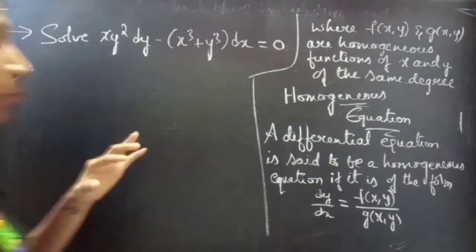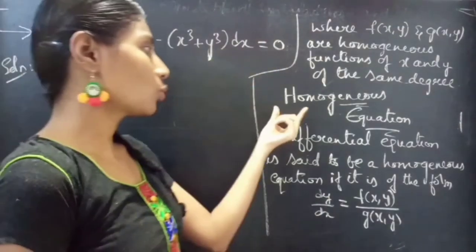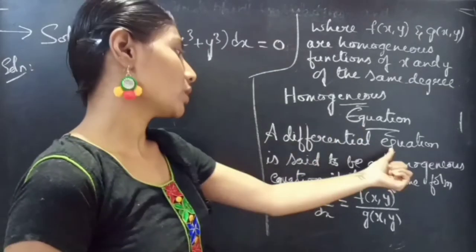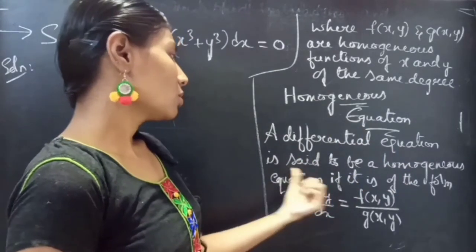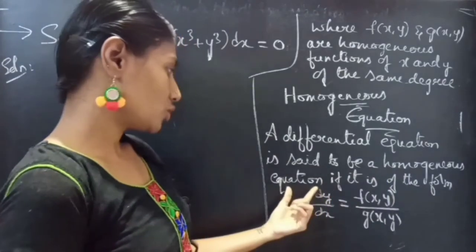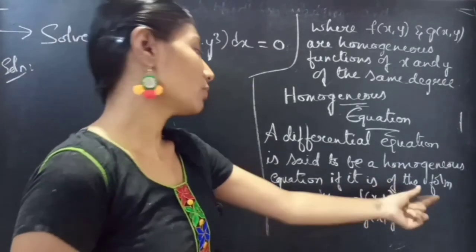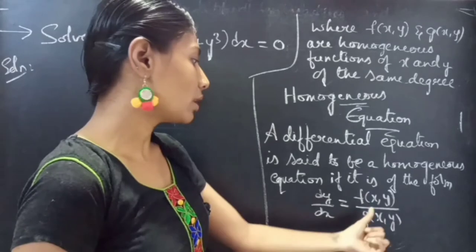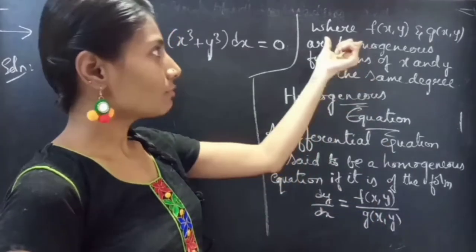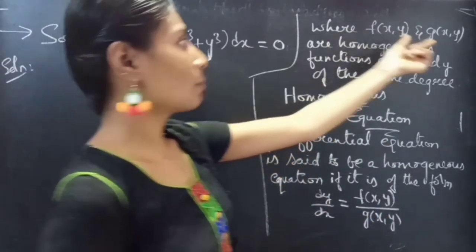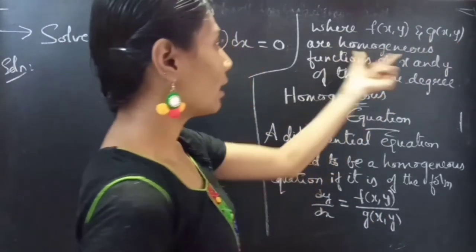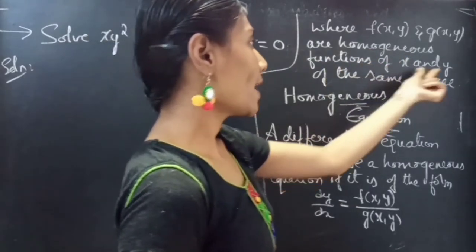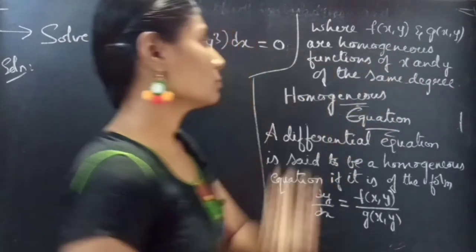Firstly, let's see what a homogeneous equation is. A differential equation is said to be a homogeneous equation if it is of the form dy/dx = f(x, y) / g(x, y), where f(x, y) and g(x, y) are homogeneous functions of x and y of the same degree.